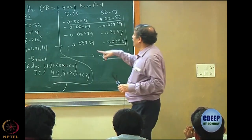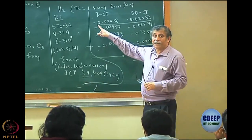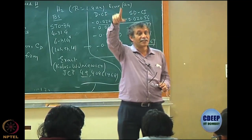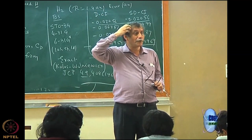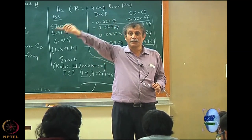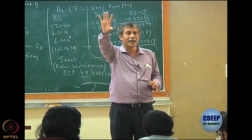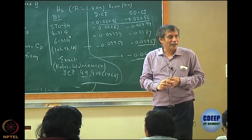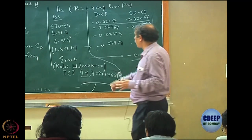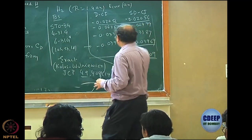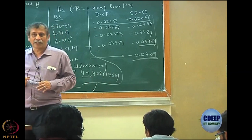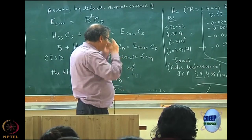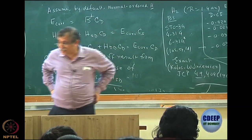Note that the correlation energy has a negative sign everywhere, simply because of the definition: E_corr = E_0 − E_Hartree-Fock. If you define it the other way, it becomes positive, but all your equations would have a sign change. We are sticking to this definition, so correlation energy must always have a negative sign.